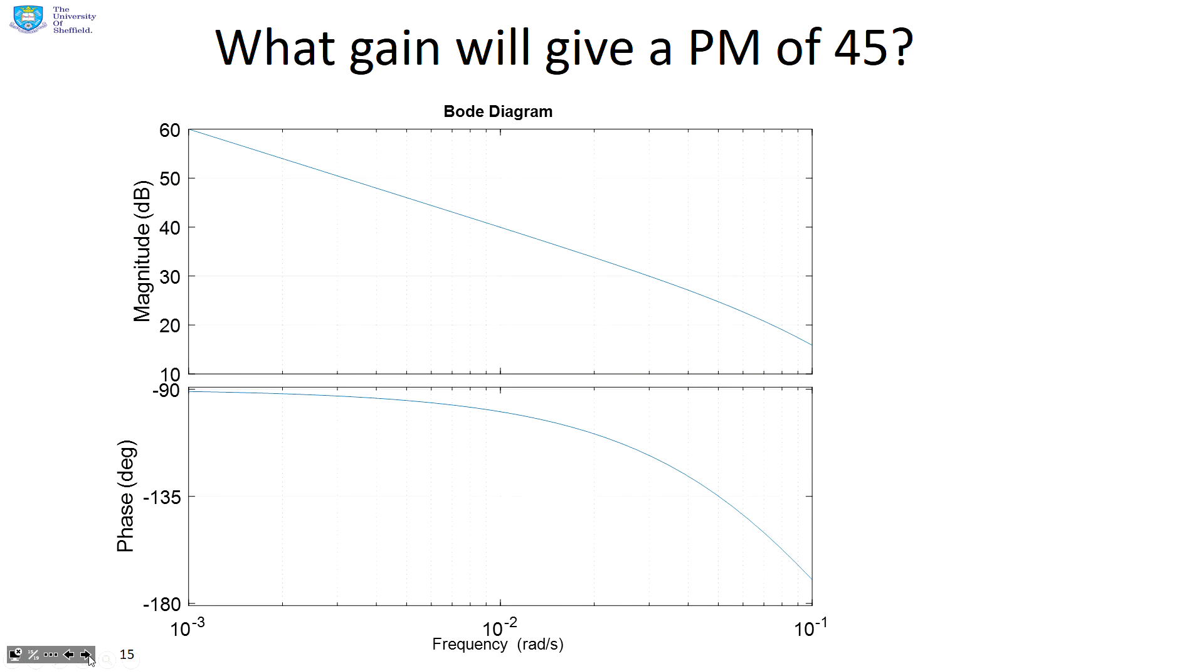Here's a similar question. What gain will give a phase margin of 45? 180 minus 45 is 135. So I'm going to draw a horizontal line through minus 135 because that gives me my desired phase margin of 45 degrees. That tells me that this has to be the gain crossover frequency. So I now run up my gain crossover frequency till I get to the gain plot, and I find the corresponding gain is roughly 25 decibels. So I need my K to be minus 25 decibels in order to move that plot down to the zero decibel line, and then I will get the required 45 degrees. You've done that very quickly, almost by inspection using this Bode diagram.